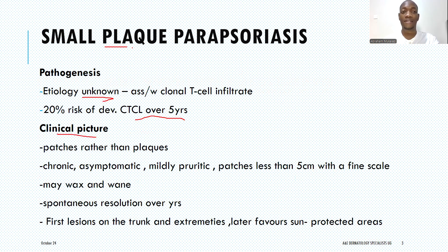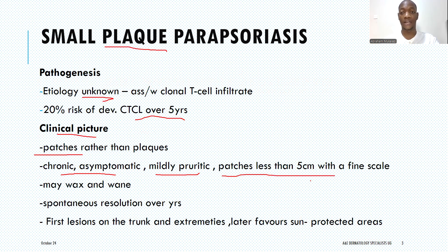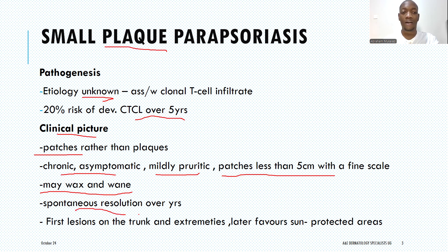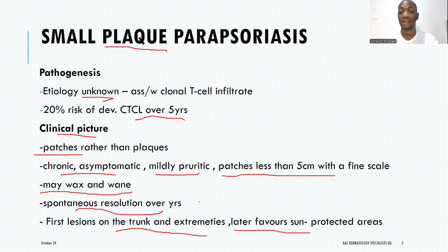In the clinical picture, though the name says plaque, we actually see patches rather than plaques. The patient presents with a chronic, asymptomatic or mildly pruritic eruption — sometimes no itch at all — consisting of patches less than five centimeters in diameter, usually covered with a very fine scale. There is a waxing and waning course: sometimes the patches are more visible, sometimes faint, and sometimes the patient is completely asymptomatic. Over time, the disease resolves spontaneously over years without leaving hyper- or hypopigmentation. It tends to affect the trunk and extremities, favoring sun-protected areas including the trunk, lower limbs, and gluteal areas.